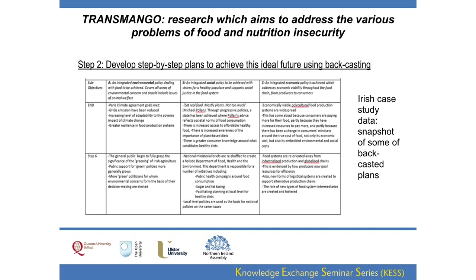The group I was working with was focusing on integrated food policy. Our group decided to separate it out into three strands of environmental, social and economic issues. This was then taken away and typed up to make it more digestible. We have our three sub-objectives — environmental, social, and economic — and then we fleshed out these sub-objectives in the next row, with steps six, five, four, three, two and one working backwards.